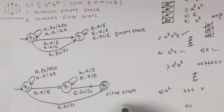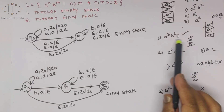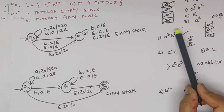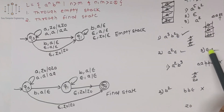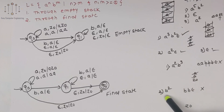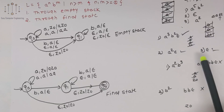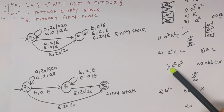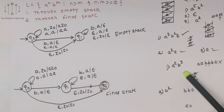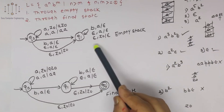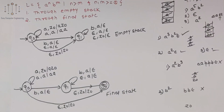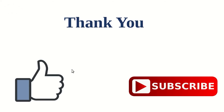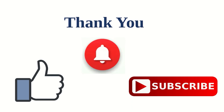So these are the PDAs using empty stack and final state. We also checked acceptance conditions: a^3 b^2 accepted, a^2 alone accepted, epsilon accepted. Rejection cases: only b string is not possible, and when length of b is greater than a this is also rejected. These cases are all handled using this pushdown automata. Thank you — if you like this video click the like button, subscribe the channel, and click the bell button for notifications.